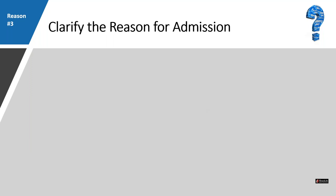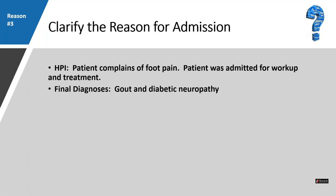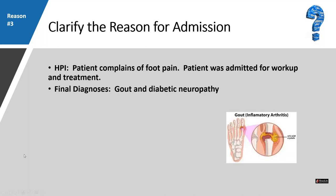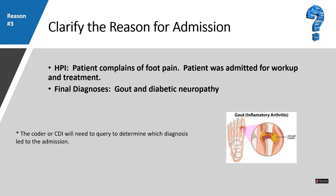Reason three: to clarify the reason for admission. The history of present illness states the patient complains of foot pain and was admitted for workup and treatment. The final diagnoses are gout and diabetic neuropathy — both chronic illnesses. We can't determine which one led to the admission from this documentation alone, so the coder or CDI professional will need to query to determine which diagnosis led to the admission — because that will be the principal diagnosis.